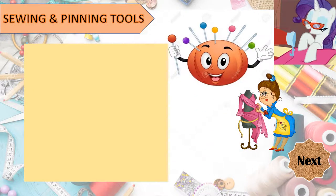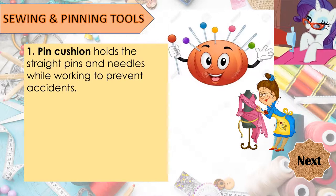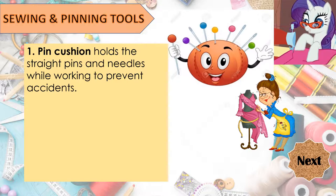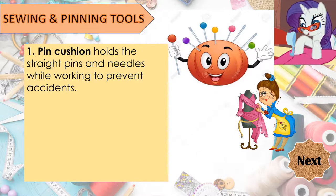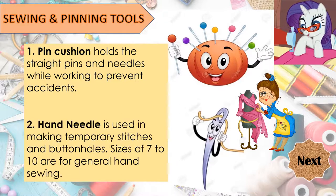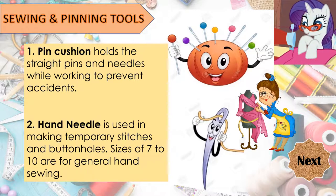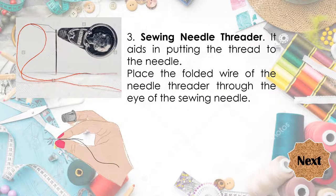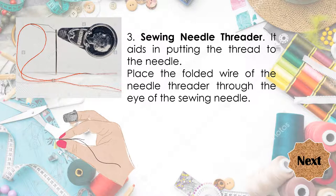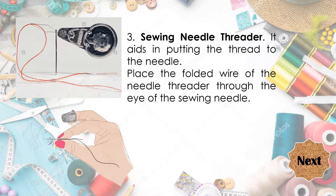We now proceed with the sewing and pinning tools. This is the pin cushion. It holds the straight pins and needles while working to prevent accidents, and it also prevents the needles and pins from rusting. This is the hand needle. It is used in making temporary stitches. Sizes 7 to 10 are for general hand sewing. The next sewing tool is the needle threader. It aids in putting the thread through the needle — just place the folded wire of the threader through the eye of the needle, and that way you can already thread your needle.